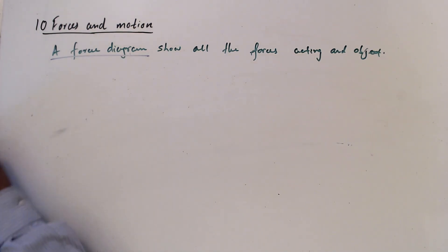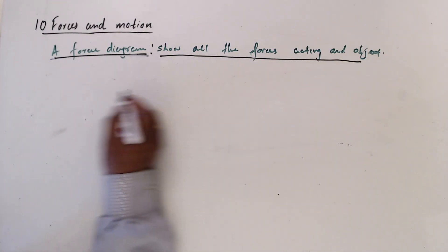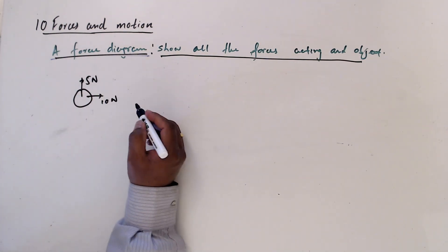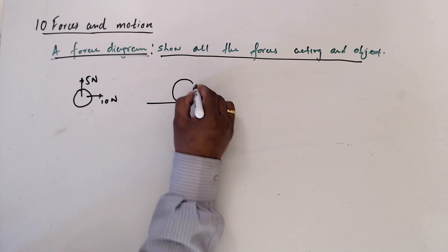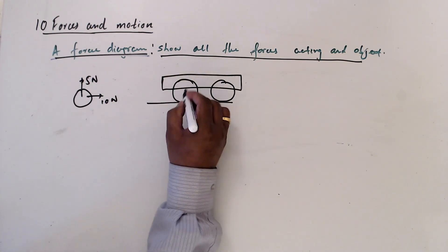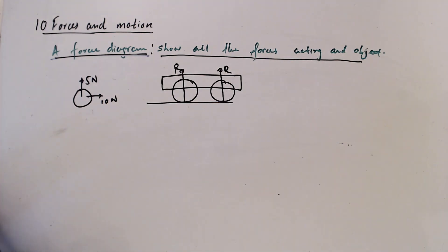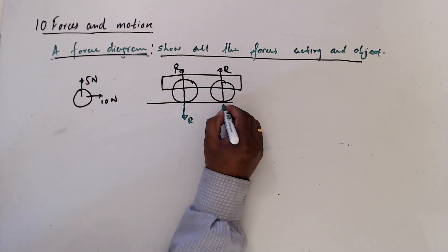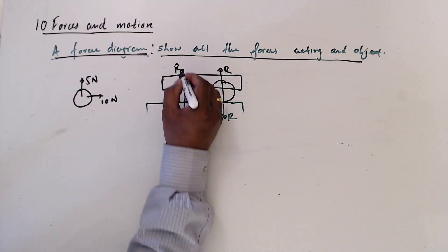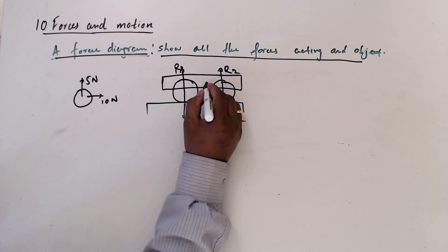The force diagram shows all the forces acting on the object. We work with 10 Newton and then 5 Newton. Sometimes a ball or a car is on a table. Then the normal reaction R is acting upward on the object and R is also acting on the table. This is R1 and R2 for the car and table respectively, and this is the weight.